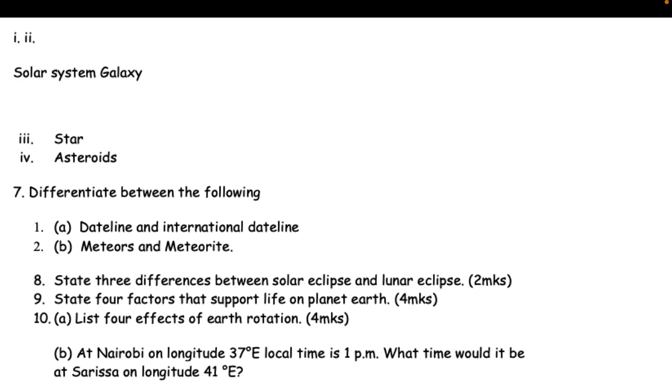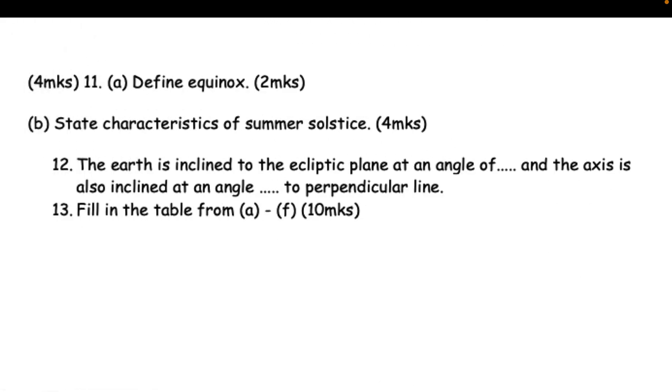6. Define the following: (i) solar system, (ii) galaxy, (iii) star, (iv) asteroids (6mks). 7. Differentiate between the following: (a) dateline and international dateline, (b) meteors and meteorite (6mks). 8. State three differences between solar eclipse and lunar eclipse (2mks). 9. State four factors that support life on planet earth (4mks). 10. (a) List four effects of earth rotation (4mks). (b) At Nairobi on longitude 37°E local time is 1 p.m. What time would it be at Sarissa on longitude 41°E?